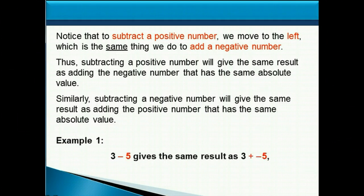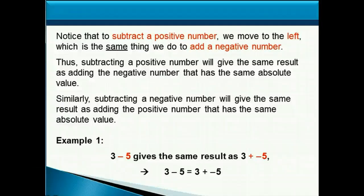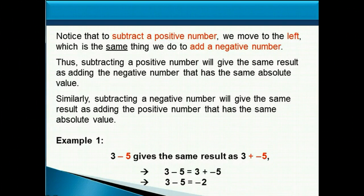For example, three minus positive five gives the same result as three plus negative five. In other words, three minus five is equal to three plus negative five. Now we can think of the addition rules: if we're adding two numbers with opposite signs, we find the difference between three and five, which is two, and since negative five has the bigger absolute value, our answer will be negative. So three minus five is equal to negative two.